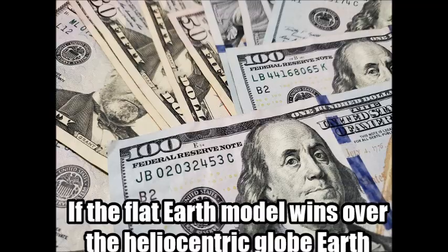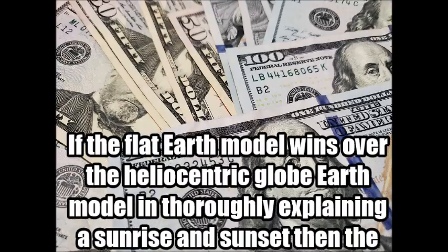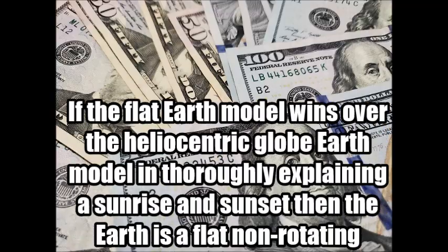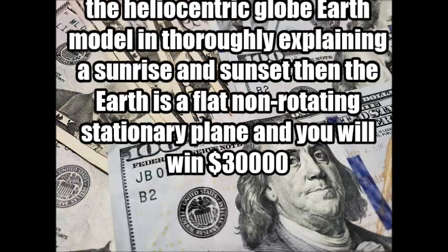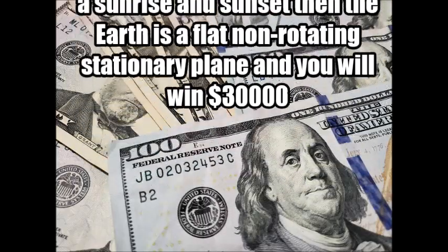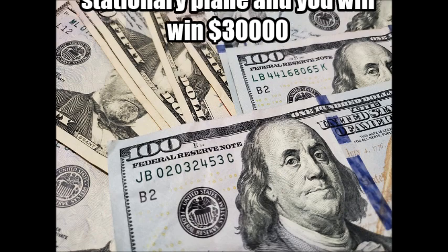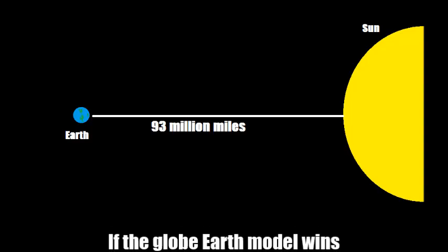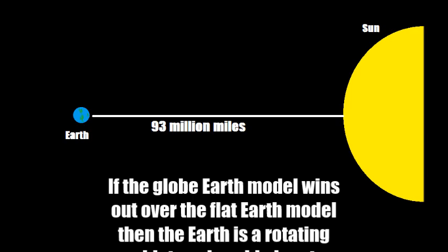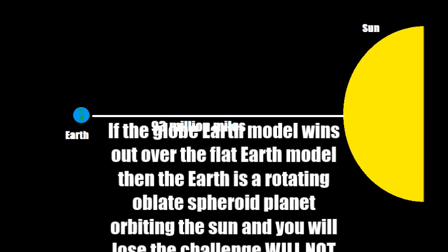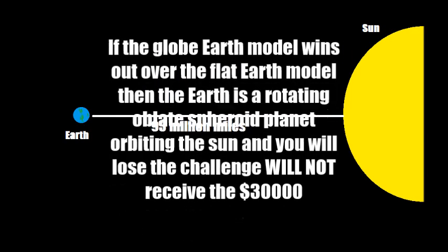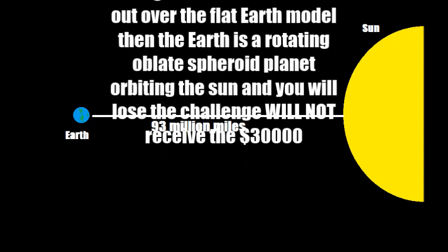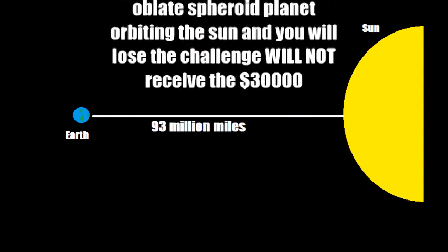If the flat earth model wins over the heliocentric globe earth model in thoroughly explaining a sunrise and sunset, then the earth is a flat, non-rotating, stationary plane and you will win $30,000. If the globe earth heliocentric model wins out over the flat earth model, then the earth is a rotating oblate spheroid planet orbiting the Sun, and you will lose the challenge and will not receive the $30,000.